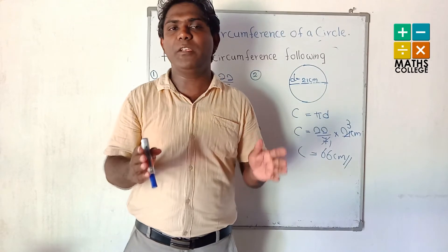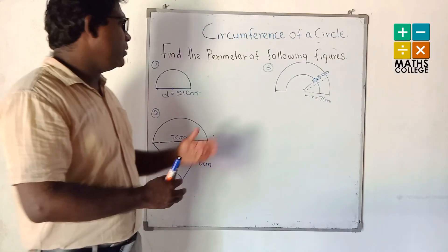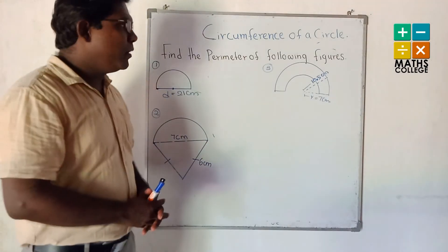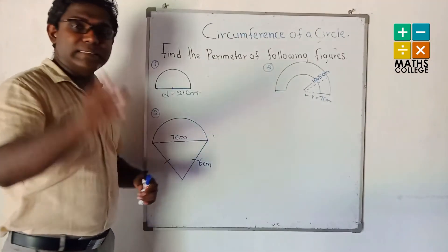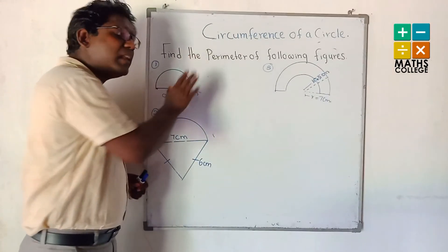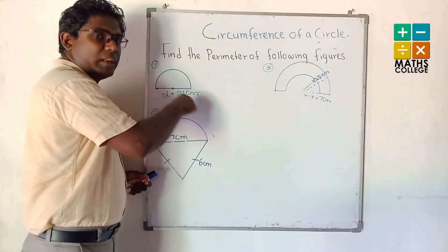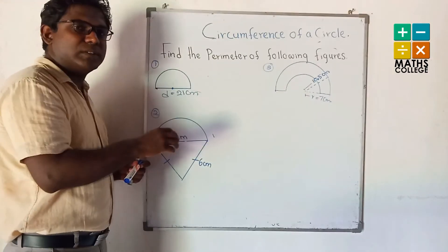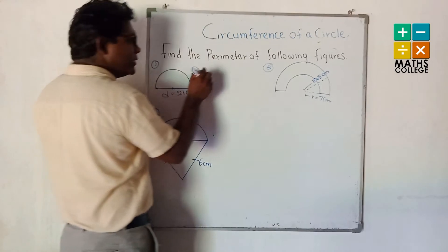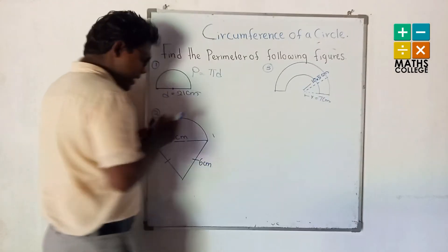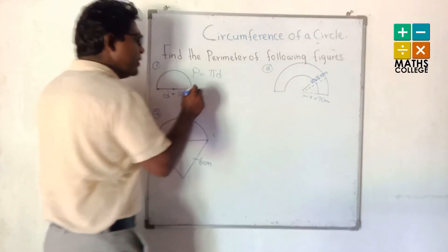Now we are going to find the perimeter of a semicircle and compound circular figures. Look at the board — find the perimeter of the following figure. The first one is a semicircular lamina. We mention perimeter here, not circumference, because circumference applies only to a full circle. For a semicircle, we take half of the formula: πD divided by 2, and add the straight line segment which is the diameter.